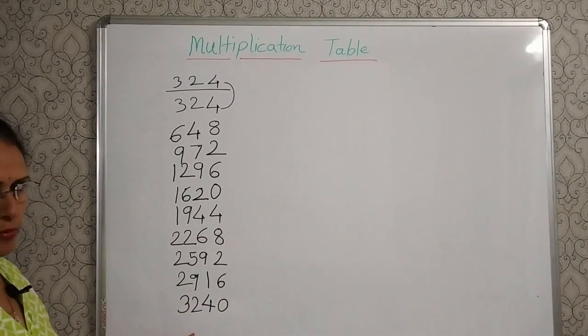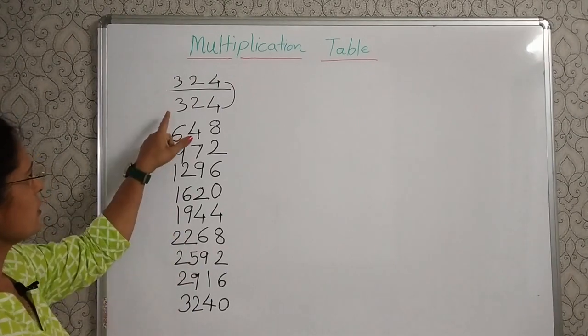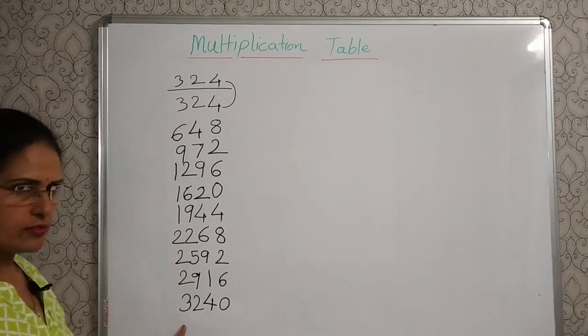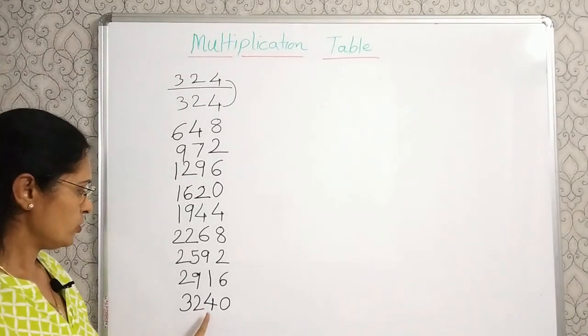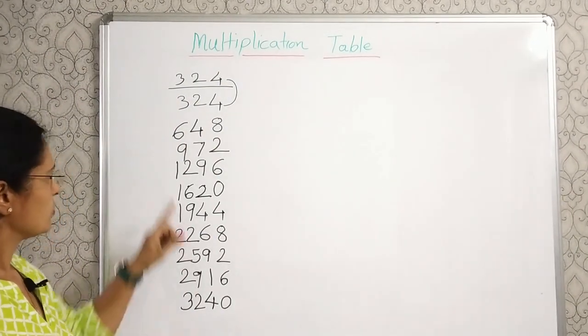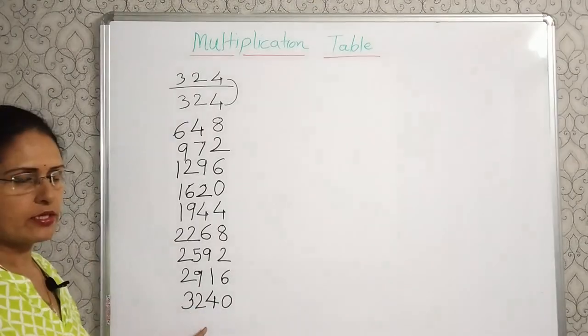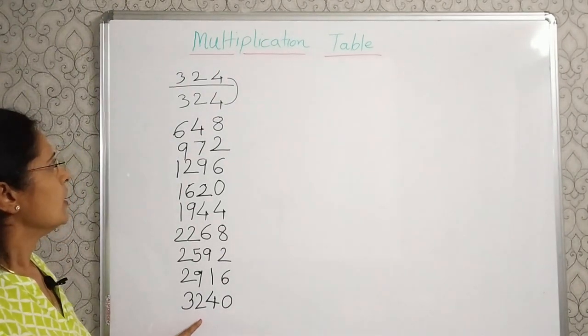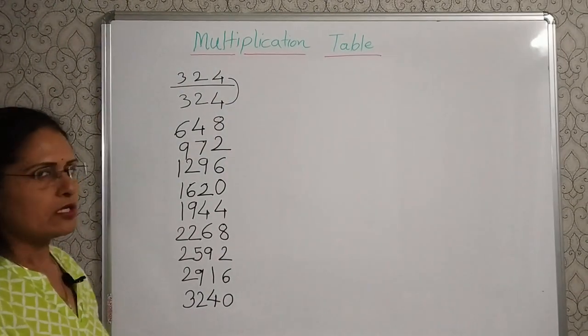Here your table is completed. You can see 324 tens are 3240. So it means your table is correct. We can take another example.